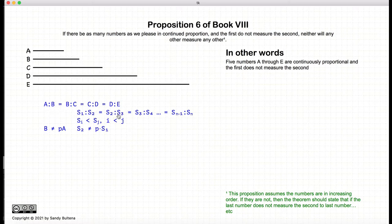Or if we're talking about a finite set of proportional numbers, we have S1 is to S2, as S2 is to S3, and so on. One of the things that is missing from this proposition is the assumption that these numbers are in increasing size. So S of I is less than S of J if I is less than J. It's just a momentary lapse on Euclid's part.